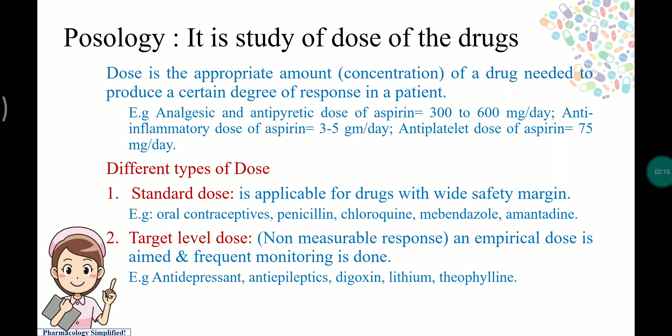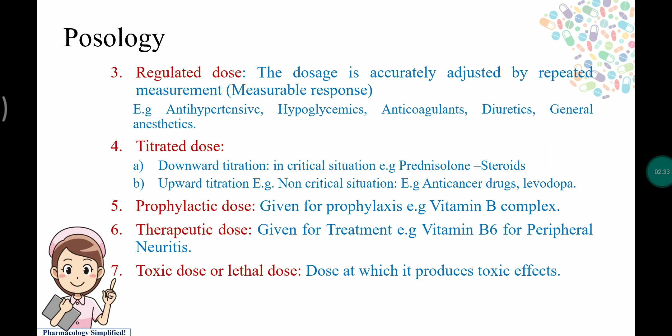We give some amount of drug to the patient and frequently monitor its actions. Examples of drugs with target level dosing include antidepressants, antiepileptics, digoxin, lithium, and theophylline. Regulated dose is accurately adjusted by repeated measurements where the response is measurable.